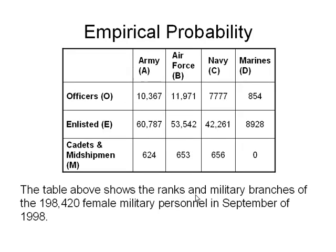So here I have a table, and this table lists out Army, Air Force, Navy, and Marines, and also officers, enlisted, cadets, and midshipmen. What's in this table is, of the 198,420 female military personnel in September of 1998, this table tells me what were their ranks and in what branches of the military they were in. And what I want to do is use that table to calculate out some probabilities.